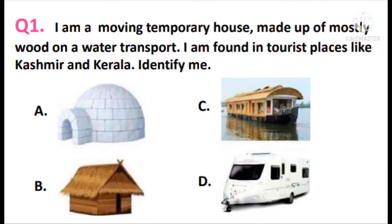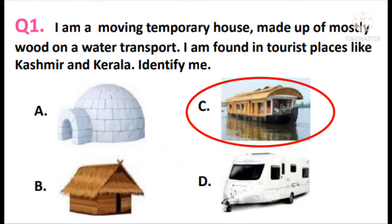Question 1. I am a moving temporary house made up of mostly wood on a water transport. I am found in tourist places like Kashmir and Kerala. Identify me. The answer is option C — it's a houseboat.